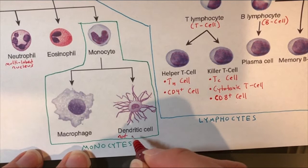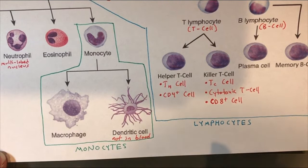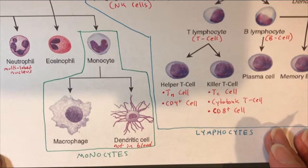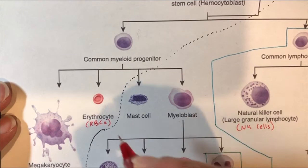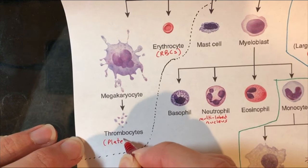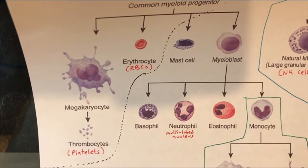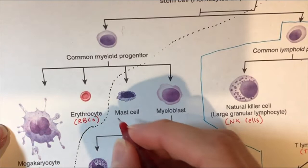Something you should know about dendritic cells is that they're not found in the blood — unlike most of these other cells, this one is not in your blood. That's in contrast to erythrocytes, also known as red blood cells, which are for sure in your blood. And then thrombocytes, also known as platelets, are definitely in your blood as well. The only other cell that's not in your blood, I believe, is the mast cell.